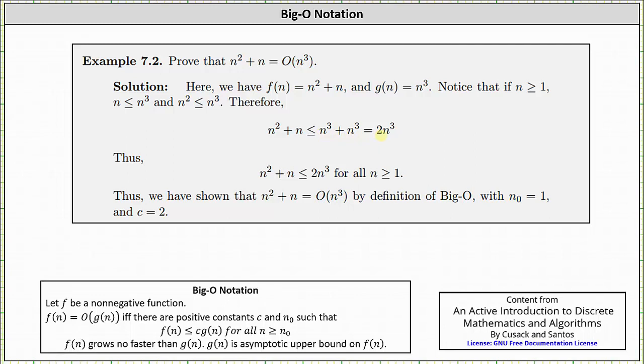Therefore we can state that n² + n is less than or equal to 2n³ for all n greater than or equal to 1. Thus we have shown that n² + n is Big-O of n³ by definition of Big-O, with n₀ equal to 1 and c equals 2, where 2 is the coefficient of n³.